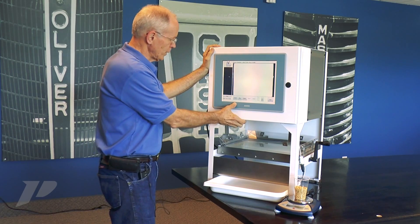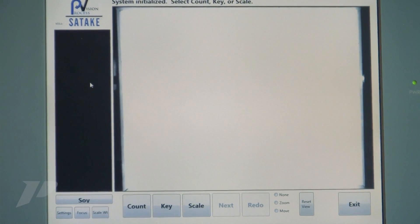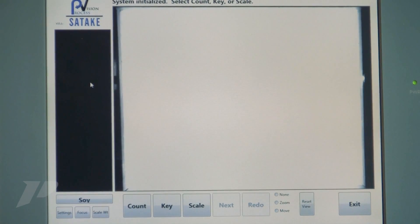The system can be run in the count mode, the key mode, or the scale mode. In count mode, we would just count the product. We would not worry about the weight. In the key mode, we would enter the weight from the keyboard. In the scale mode, we let the weight come in from the scale automatically.